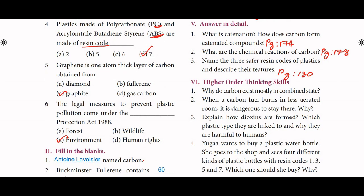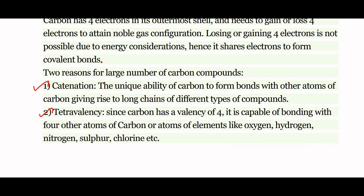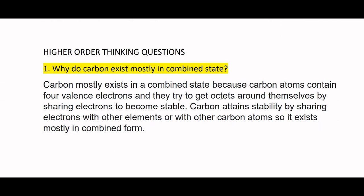Higher order thinking skills: Why does carbon exist mostly in a combined state? Carbon mostly exists in a combined state because carbon atoms contain four valence electrons and they try to get octets around themselves by sharing electrons to become stable. Carbon attains stability by sharing electrons with other elements or with other carbon atoms. Hence, it exists mostly in combined form.